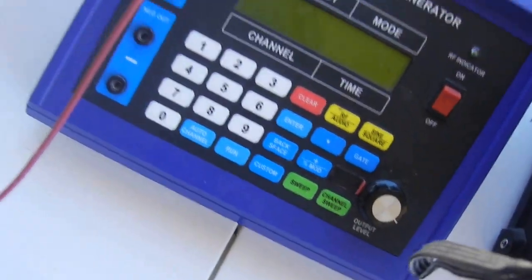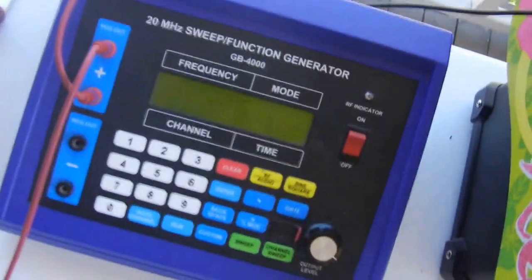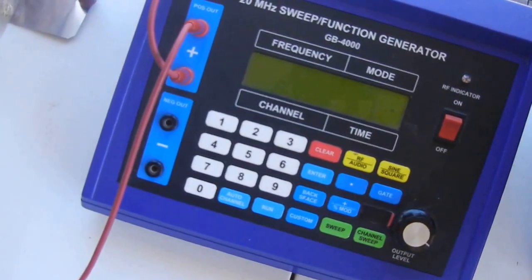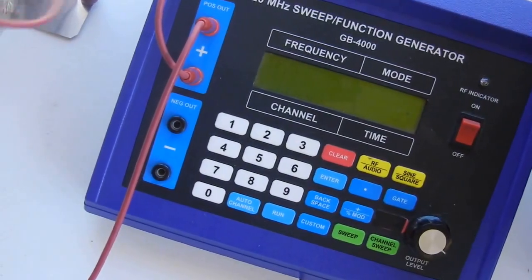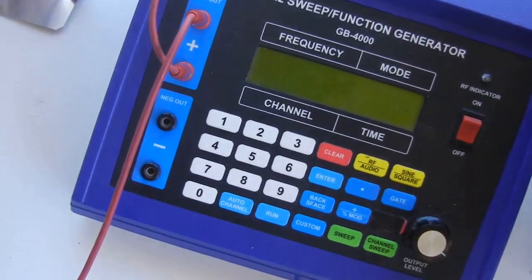This is the multi-function sweep generator, also known as a rife machine. I use that for infusing additional healing frequencies into the plants while they're singing.